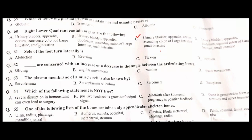Turning the sole of the foot laterally is eversion. B is the correct option. Angular movements are concerned with increase or decrease in the angle between the articular bones. B is the correct option.